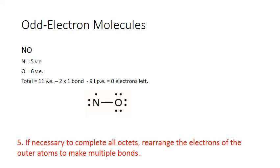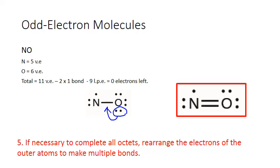While we can't give nitrogen a full octet because we have an odd number of electrons, we can get it closer to eight by forming a double bond with oxygen. If oxygen shares one of its lone pairs with nitrogen, nitrogen will actually have seven electrons, and our final Lewis structure will look like this.